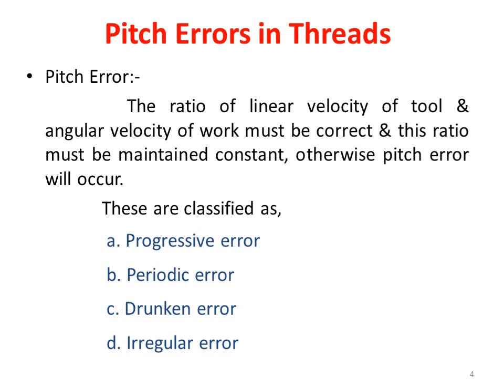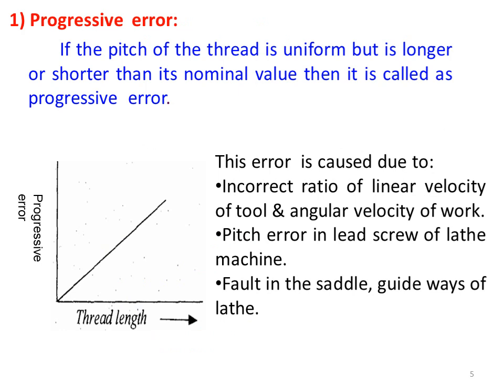The first type is progressive pitch error. If the pitch of the screw thread is uniform but longer or shorter than its nominal value, it is called progressive pitch error, and this error increases with thread length. It is caused due to: incorrect ratio of linear velocity of tool and angular velocity of the workpiece, pitch error in the lead screw of the lathe machine, and faults in the saddle or guideways of the lathe machine.